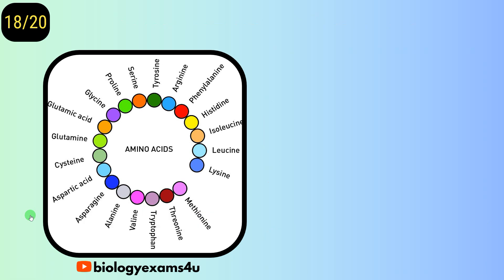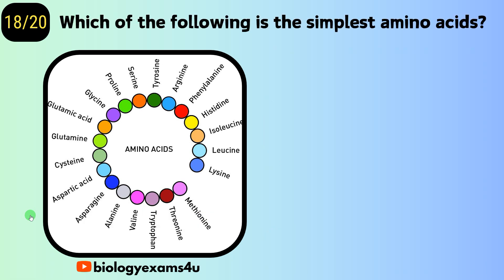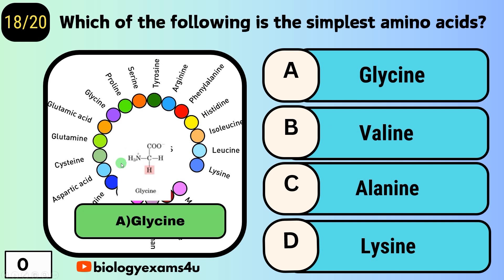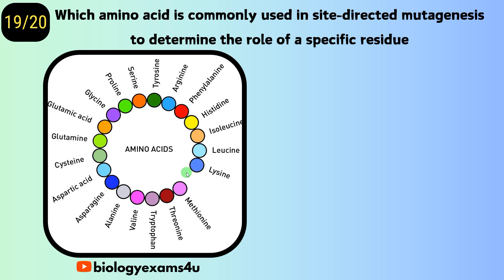Question number eighteen: which of the following is the simplest amino acid? Option A, glycine; option B, valine; option C, alanine; option D, lysine. The answer is glycine, which is the simplest amino acid where the side chain is a hydrogen, as you see here.